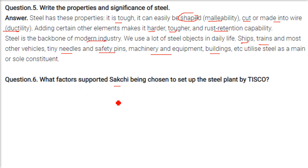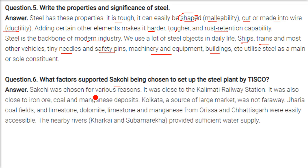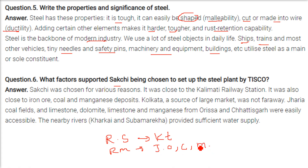What factors supported Sakchi being chosen to set up the TISCO steel plant? Sakchi is close to the Kalimati railway station. It is also close to raw materials: iron ore, coal, and manganese deposits. Kolkata provides a large nearby market. The Jharia coal field supplies coal. Limestone, dolomite, and manganese are obtained from Odisha and Chhattisgarh. The Kharkai and Subarnarekha rivers provide sufficient water supply.